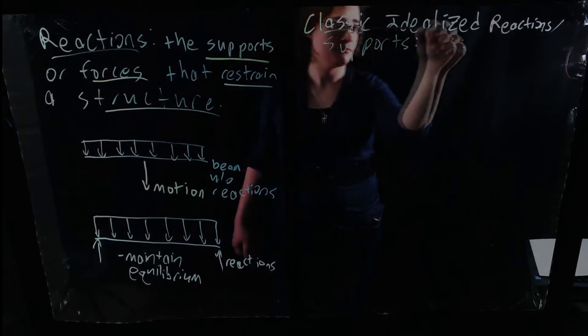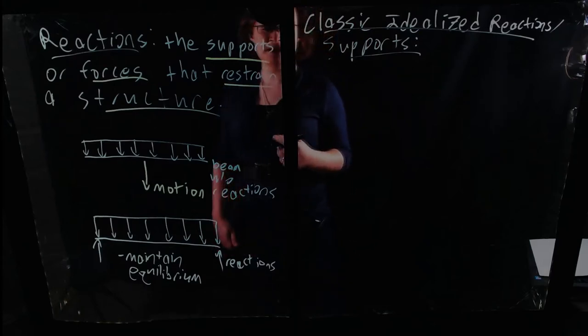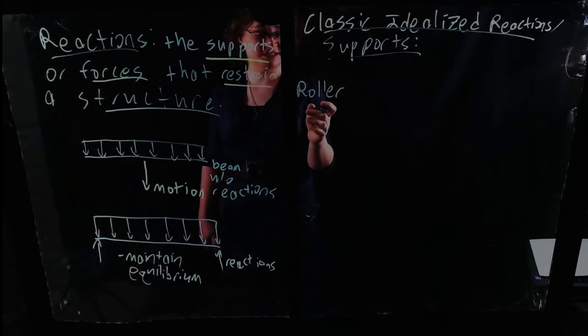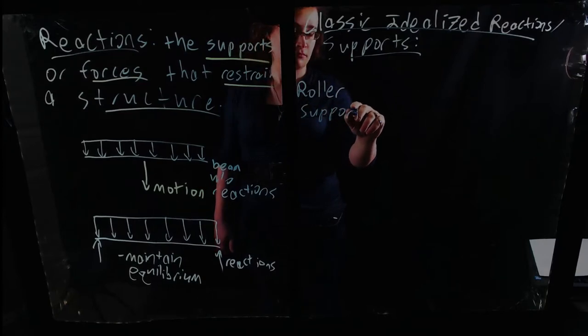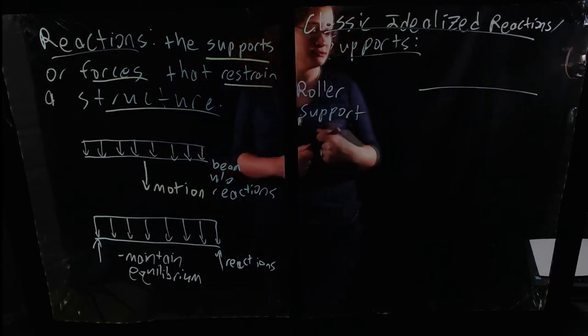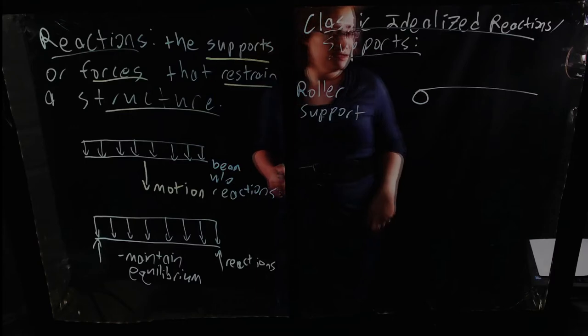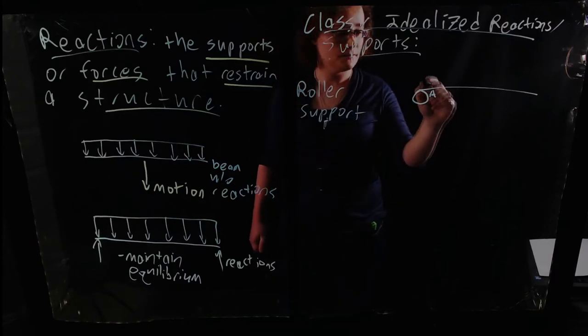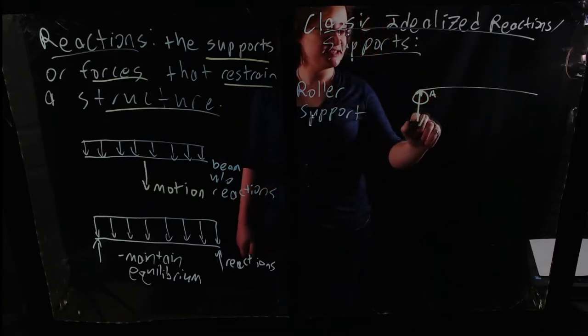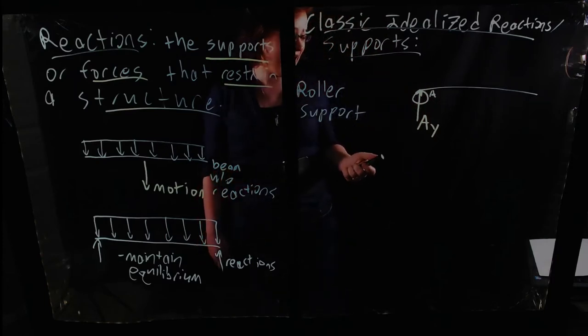Reactions are supports. So our first type of support is going to be a roller support. And we're looking at just 2D supports here. A roller support is able to provide only one direction of translational force. And we usually draw it something like this. And let's say this is point A on a beam. And we would have at that point a reaction force AY, A sub Y, for instance, that represents a vertical force at that on that roller.